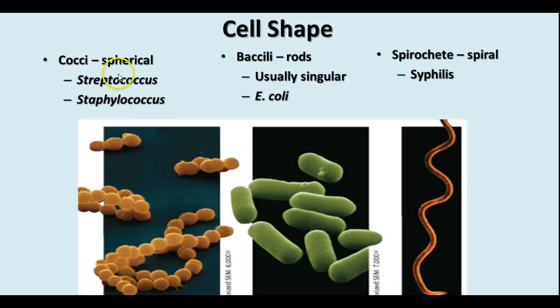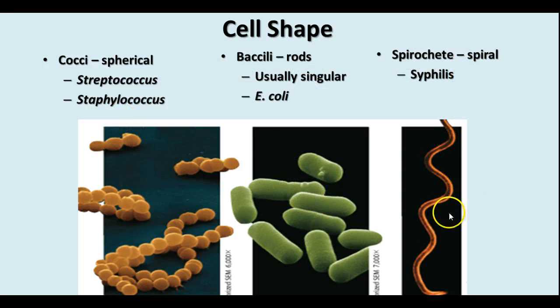The three shapes are the coccus, which is spherical; the bacillus, which is a rod; and the spirochete, which is a spiral.